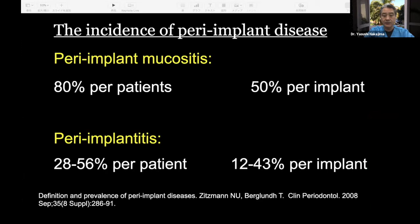This is another report on the incidence of peri-implant disease by Professor Nikola Tsitsman in 2008 — I think the first report on this incidence. Peri-implant mucositis is 80% per patient and 50% per implant. Peri-implantitis is 28% to 56% per patient and 12% to 43% per implant.